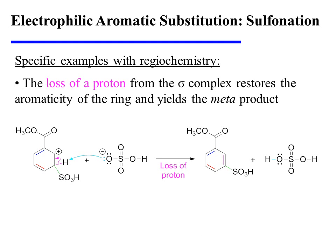Again, the reaction concludes with the loss of a proton from the only ring carbon of the sigma complex that is sp3 hybridized. This restores aromaticity to the ring, and in this case yields the meta-product.